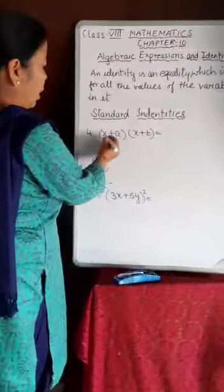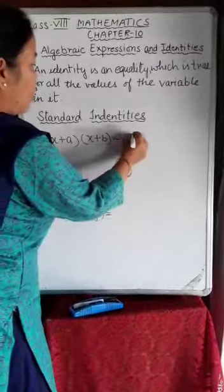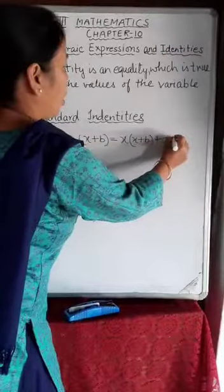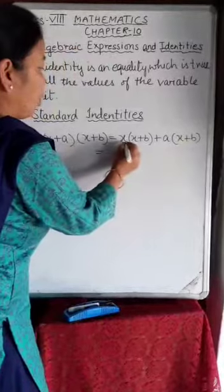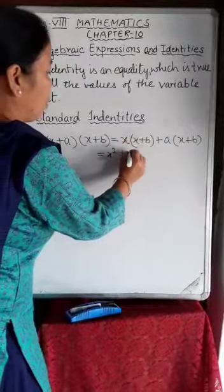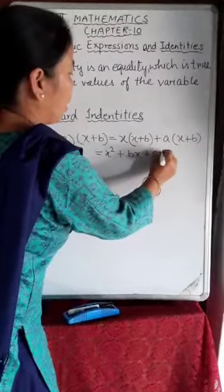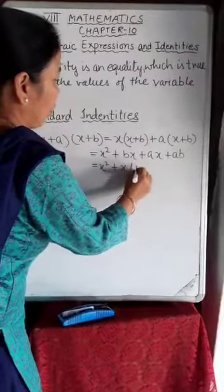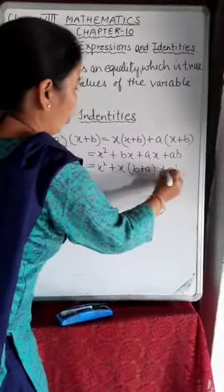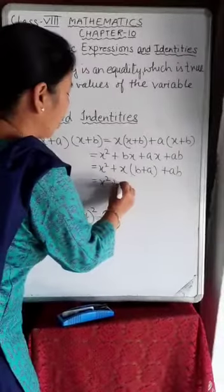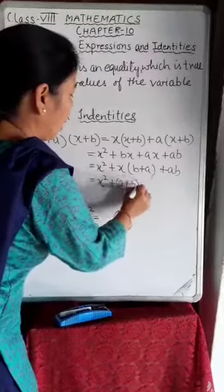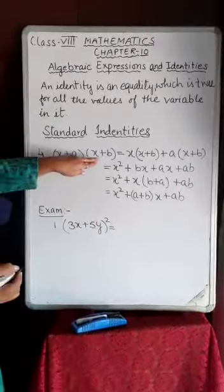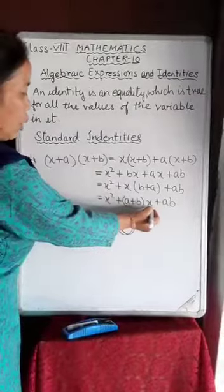The fourth identity is (x + a)(x + b). Multiplying out: x×x = x², x×b = bx, a×x = ax, a×b = ab. Taking x as common from the middle terms gives x(a + b). So (x + a)(x + b) = x² + (a + b)x + ab.